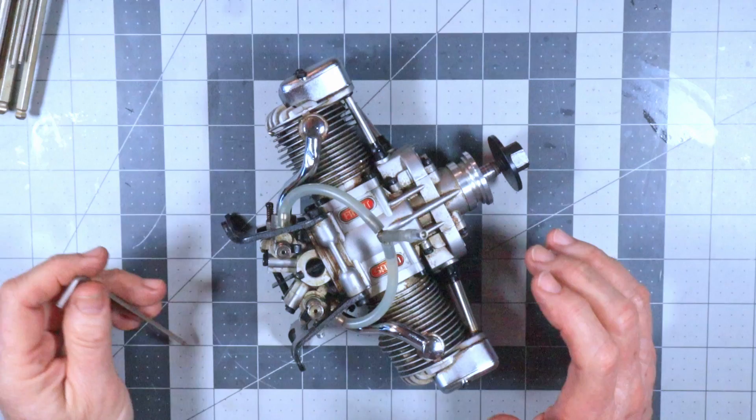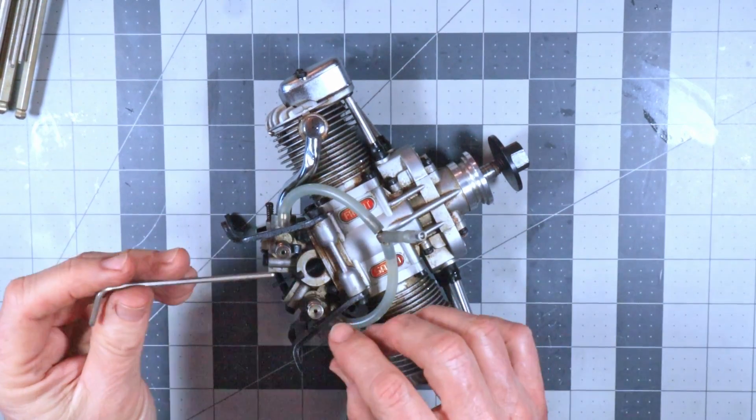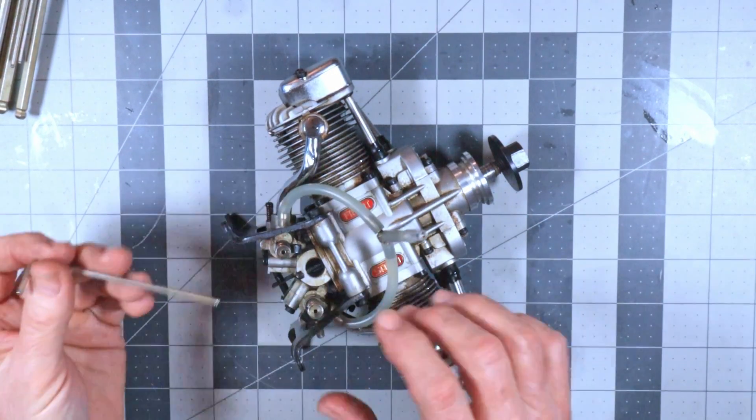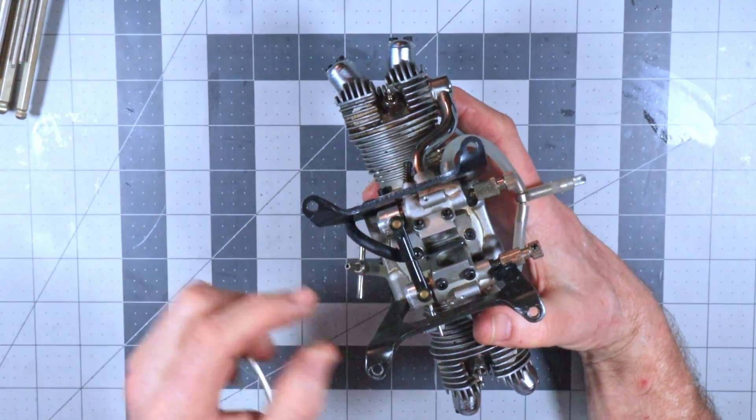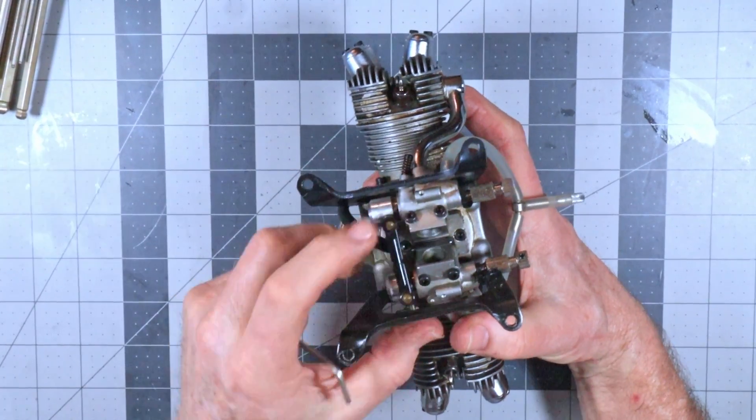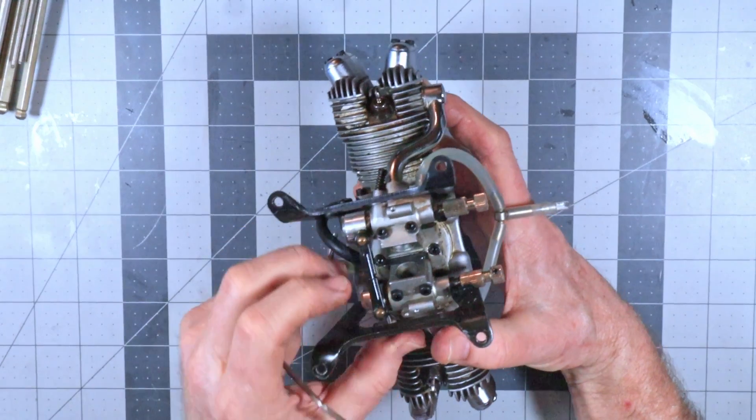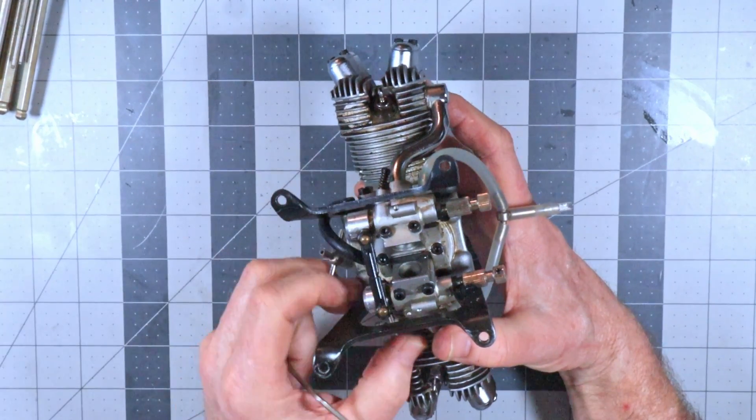I was just sitting here off camera trying to preliminarily set these carbs for an upcoming run. And as you can see here, the carbs are linked by this linkage so that they both theoretically open and close the same amount.